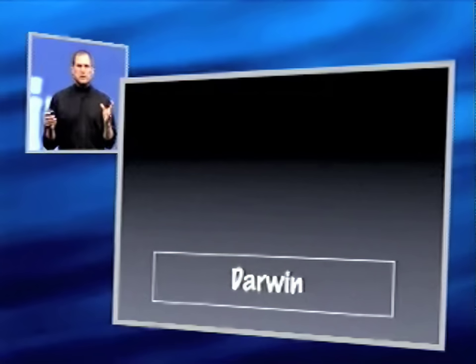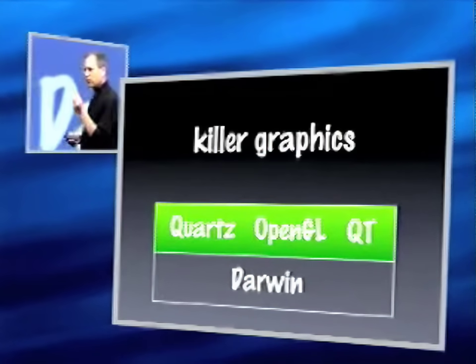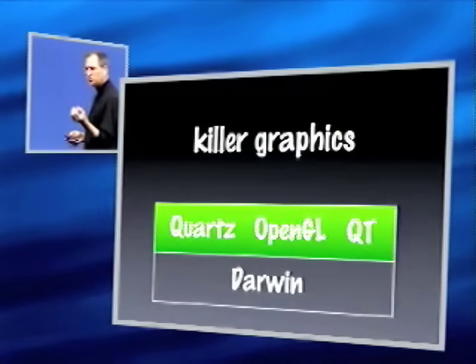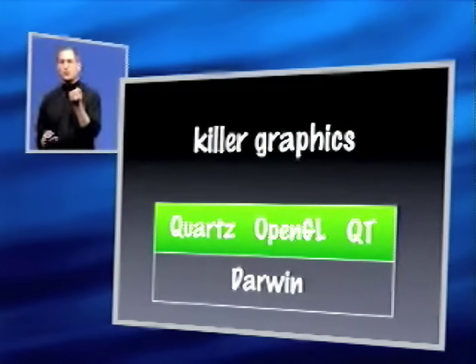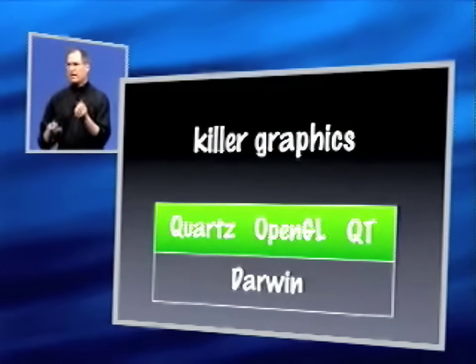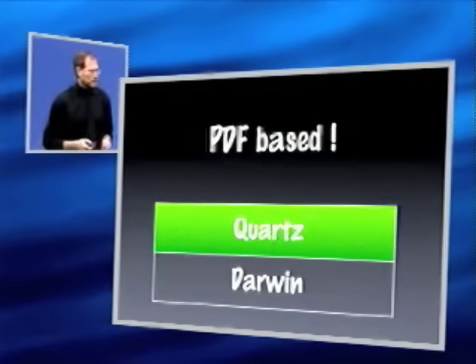The next layer on top of Darwin is killer graphics. We've got three components: our 2D, which is Quartz; our 3D, which is OpenGL; and our media layer, which is QuickTime. And they're all seamlessly integrated right into the operating system.